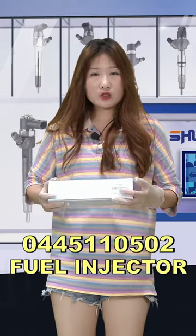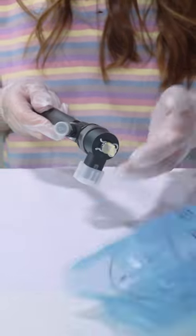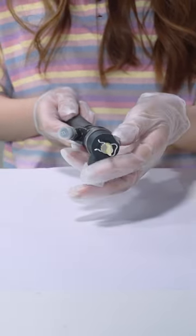White box, the product code here is 0445110502, supports customized service. And the first part is the solenoid valve. As you can see, each spare part already uses a protection cover.